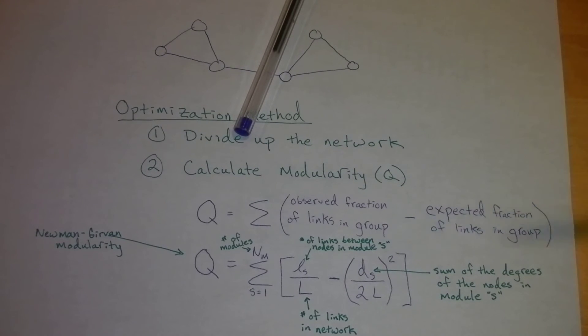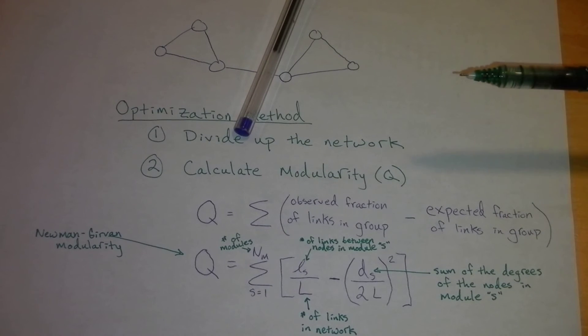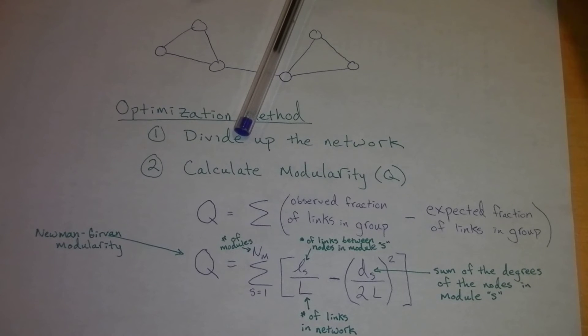Then we want to calculate our expected fraction of links in the group. To do that, we subtract it by the sum of the degrees of nodes in module S. The term degree is something I haven't gone over yet. Each node has a characteristic degree, and it's essentially a measure of the number of links it has.